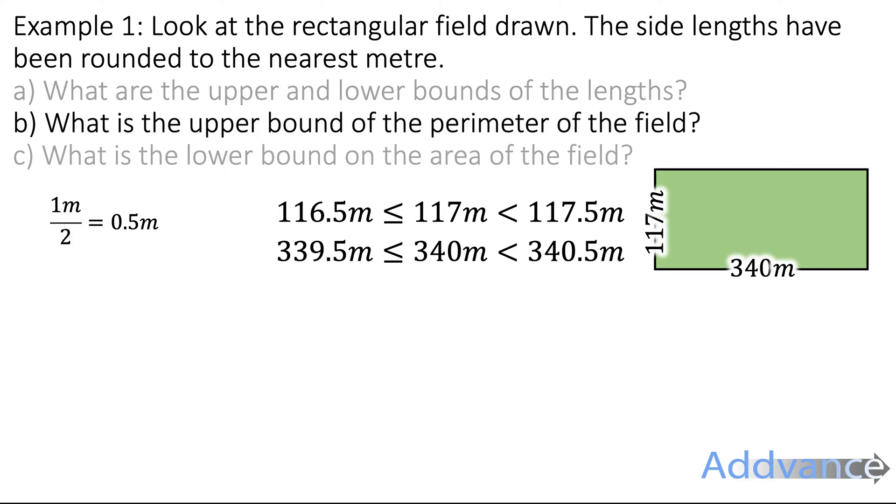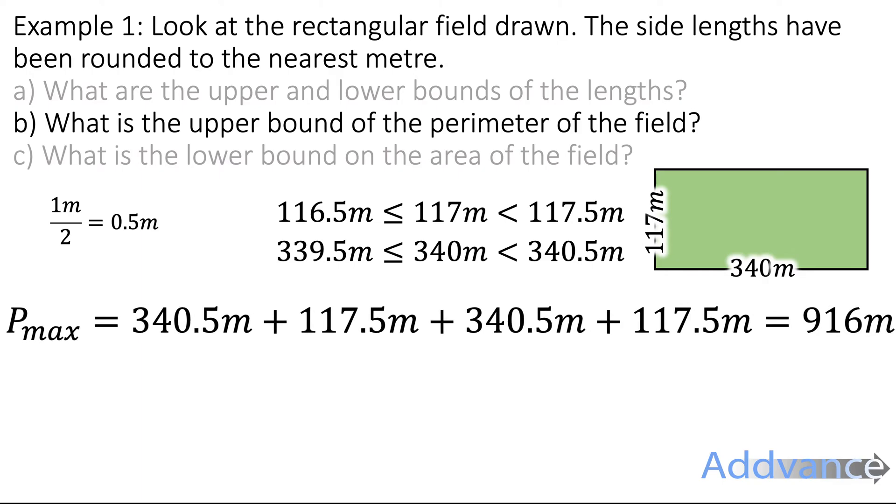Question B: what is the upper bound of the perimeter of the field? The perimeter will be given by the length plus the height plus the length plus the height, adding them all together. But we want the upper bound, so the largest possible perimeter. To get the perimeter as big as possible, we want the lengths to be as big as possible. So we're going to take the longest possible lengths and the longest possible heights and substitute those in. We're selecting 117.5 and 340.5 because they're the longest possible lengths to make the longest possible perimeter. If we put that into a calculator, you should get 916 metres.